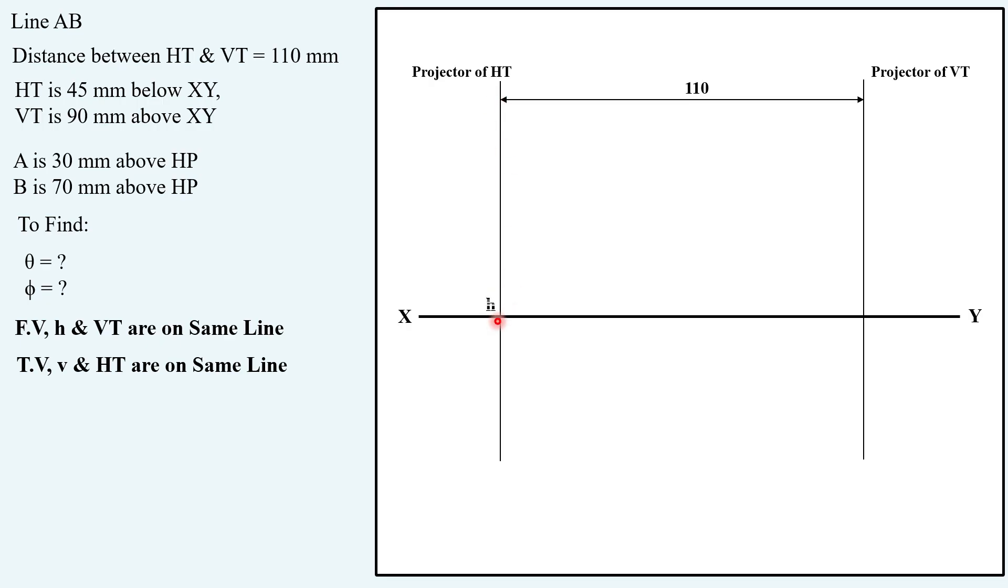So this is a projector of HT. Distance between HT and VT 110 as given to us, another projector that is projector of VT here. If this is the HT projector on XY you will have H and 45 mm below XY you will have HT. Similarly on this vertical projector on XY you'll have V and 90 mm above XY you'll have VT.